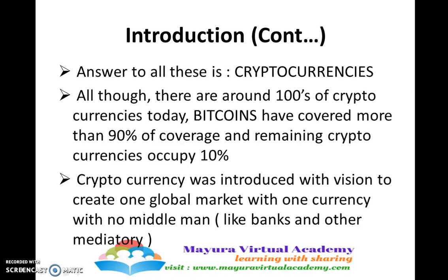At present, when you look at the global market, there are hundreds of cryptocurrencies. However, Bitcoin occupies more than 90 to 95 percent of the digital cryptocurrency share, and all other cryptocurrencies come under the umbrella of the remaining 10 percent. The main vision behind introducing cryptocurrencies was to create one global market with one currency and no middlemen like banks or other intermediaries.